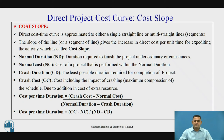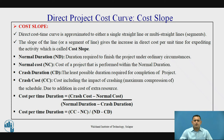The cost slope is a concept which helps us to determine the extra cost to a particular activity per unit duration if we go for the compression of that activity. The direct cost-time curve is approximately a straight line or multi-straight line segments. The cost slope is the particular cost associated with the activity per unit duration. The first term required is normal duration — the duration required to finish the activity under normal or ordinary conditions.